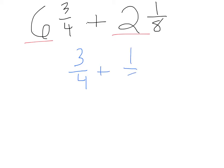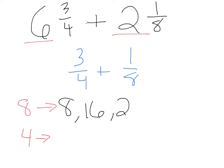First let's focus on that 3 fourths and 1 eighth. Looking at those fractions by themselves, I want to find a common denominator. I'm going to look at all my multiples of 8 and all my multiples of 4. Multiples of 8: 8, 16, 24, 32. Now let's look at our 4s: 4 times 1 is 4, 4 times 2 is 8 — and we've already found our common denominator. It is 8.